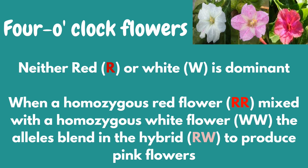As an example, in 4 o'clock flowers, neither red nor white is dominant. When a homozygous red flower is crossed with a homozygous white flower, the alleles blend in the hybrid to produce pink flowers.